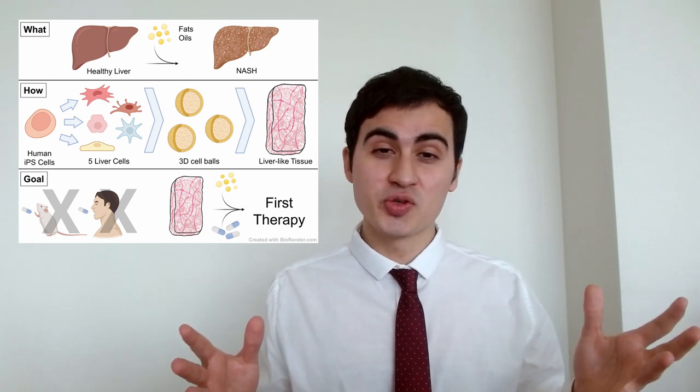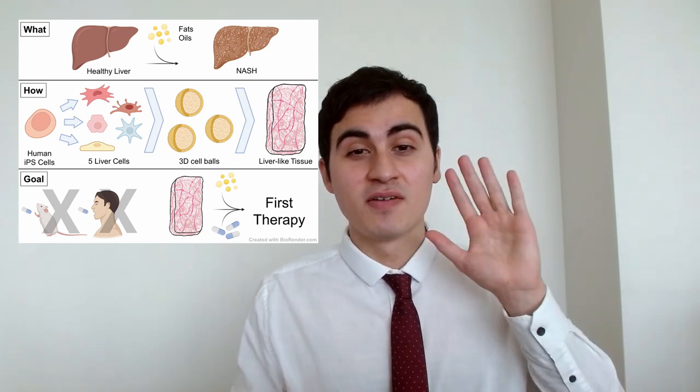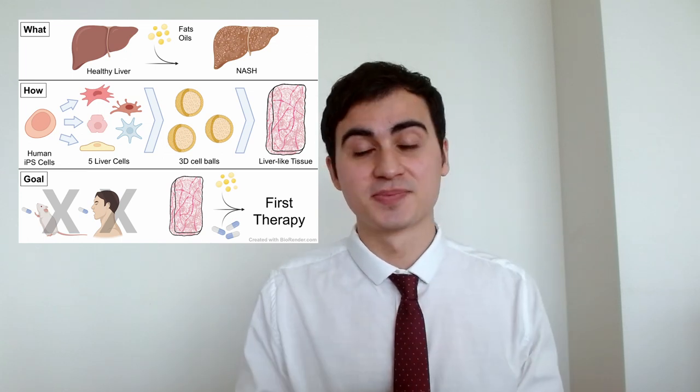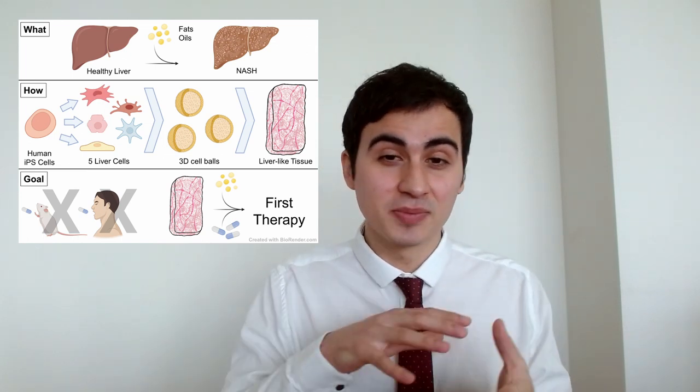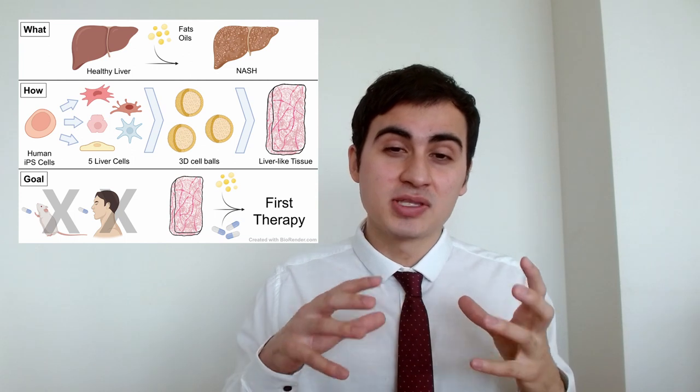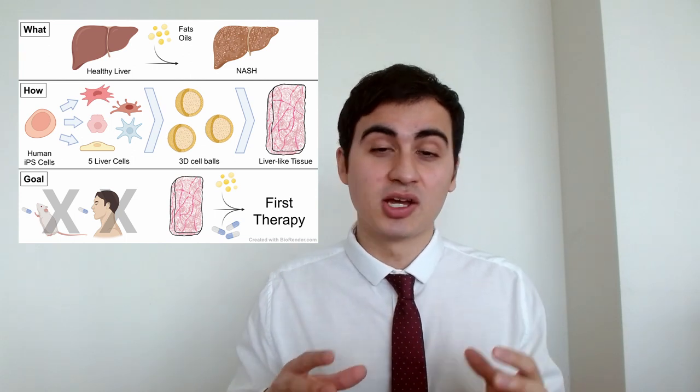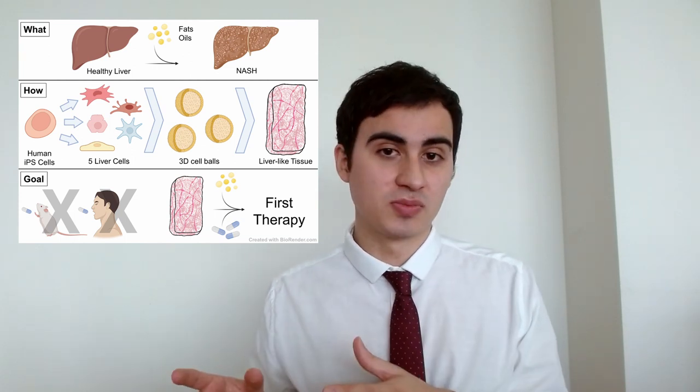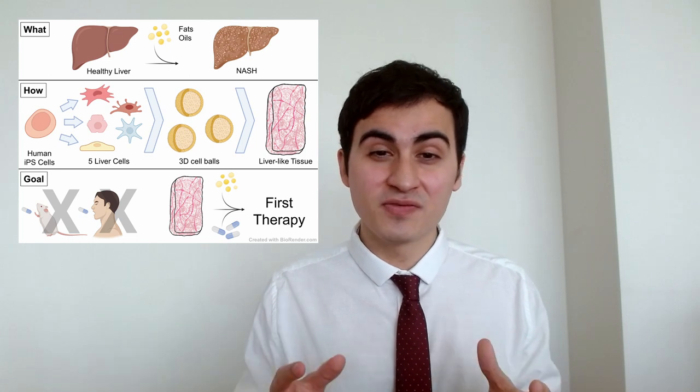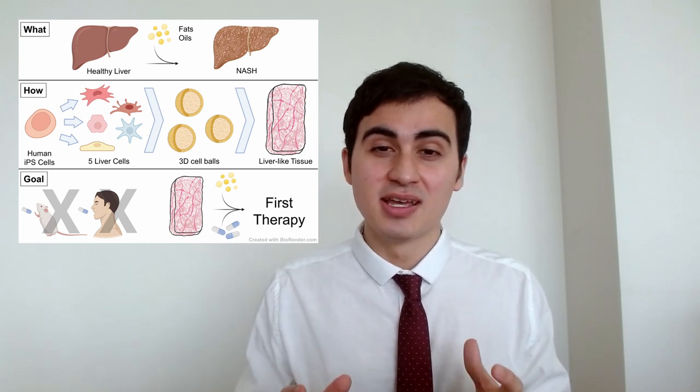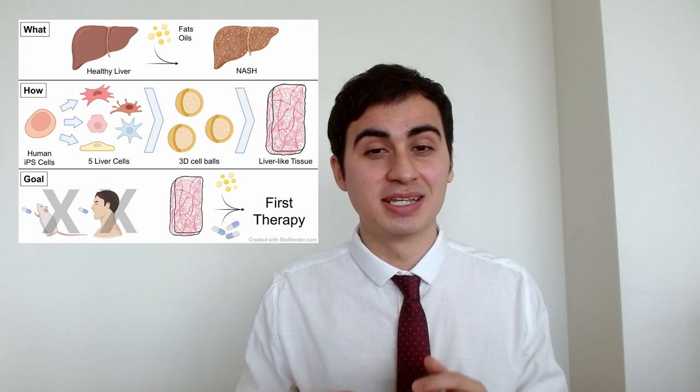So I use iPS cells to make five different types of liver cells. I mix these cells together in a ball, and I use these balls to construct a human-like liver tissue. It even has blood vessels and immune cells and everything I need to study NASH.